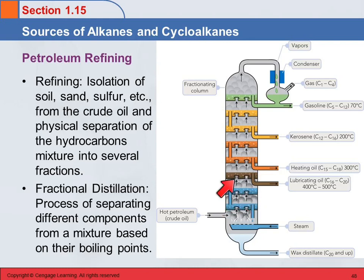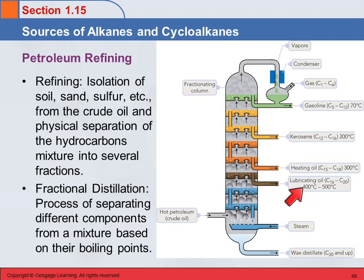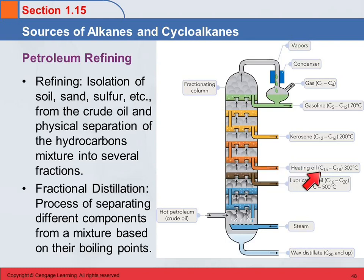It's very warm here, and so we can get C16 to C20 alkanes to come out. Those have a boiling point of 400 to 500 degrees Celsius. These sorts of things are used as lubricating oils. Further up the column it's cooling down, and we've got the C15 to C18s around 300 degrees, which is used for heating oil. And there's kerosene.